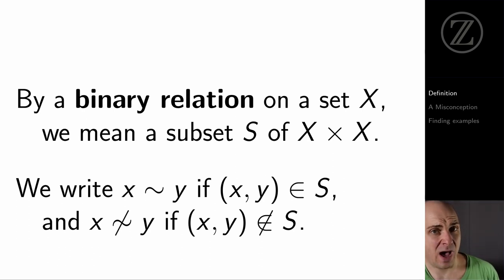We see that x tilde y if x comma y is an element of that subset S, and we see that x doesn't tilde y, that the relation doesn't hold, if the pair x comma y isn't an element of that subset S.